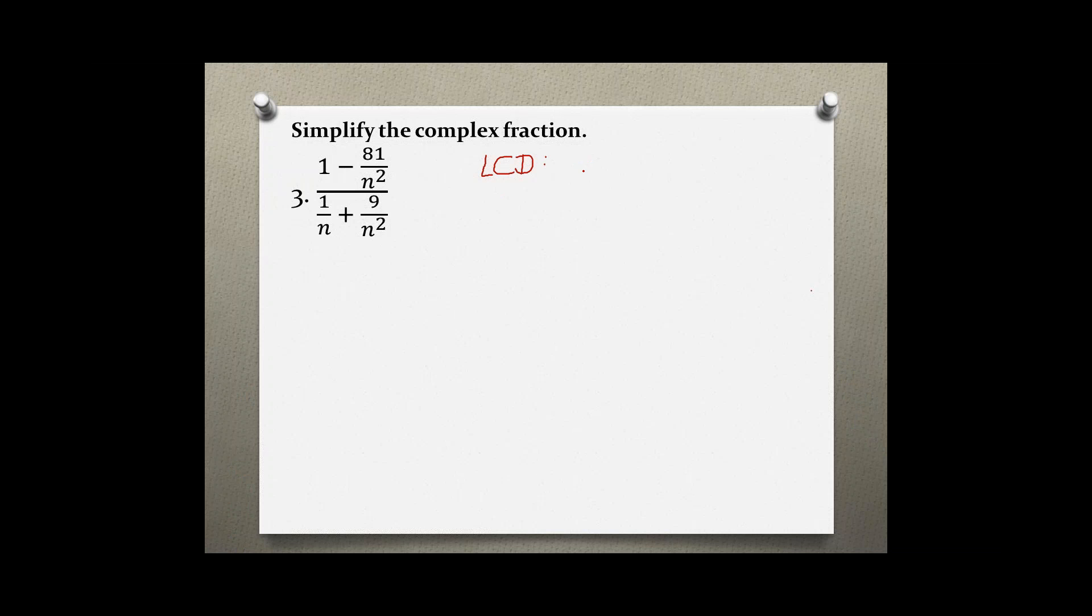To find the least common denominator we can list all individual denominators, and in this case we have n squared, n, and n squared.